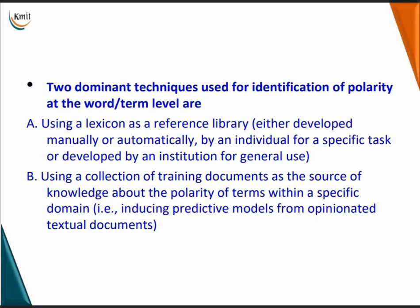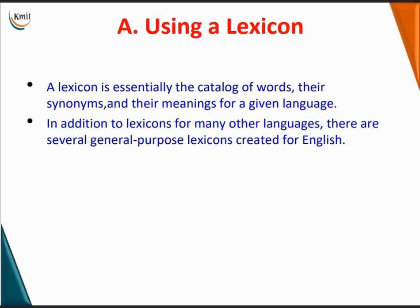The two dominant techniques used for identification of polarity at the word or term level are: first, using a lexicon as a reference library; and second, using a collection of training documents as a source of knowledge about the polarity of terms within a specific domain. Let us discuss these one by one. A lexicon is essentially a catalogue of words, their synonyms, and their meanings for a given language.